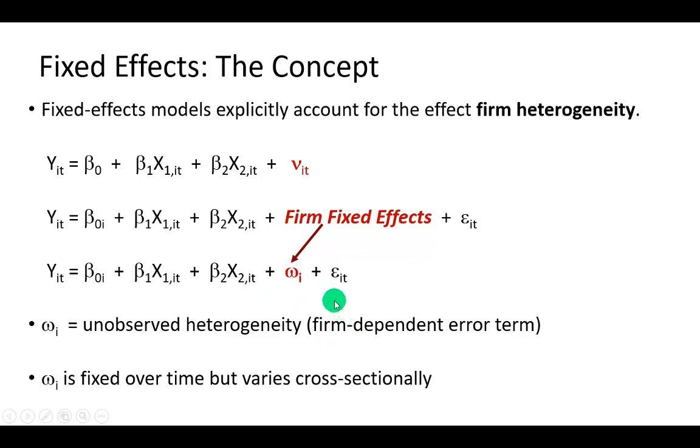So from the general panel data specification right up here, what we're going to do is break down the error term Vit into the firm dependent error term Omega and the idiosyncratic term Epsilon.